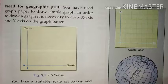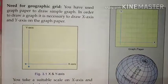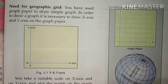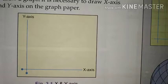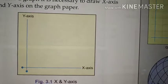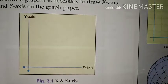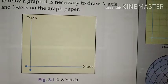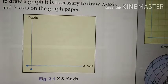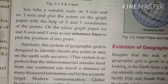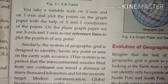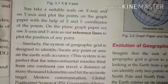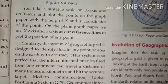The question arises: why do we need a geographic grid? You have used graph paper to draw simple graphs. In order to draw a graph it is necessary to draw an x-axis and a y-axis on the graph paper. We have drawn the x-axis — the horizontal line — and the y-axis — the vertical line. We use those coordinates to locate a specific point, taking a suitable scale on the x-axis and y-axis.